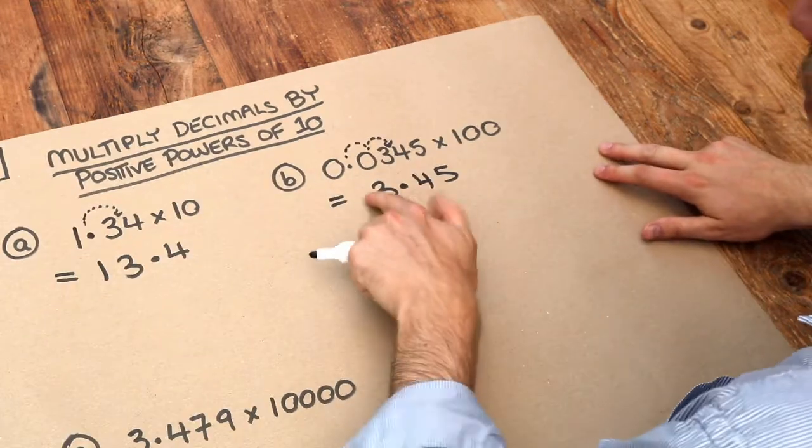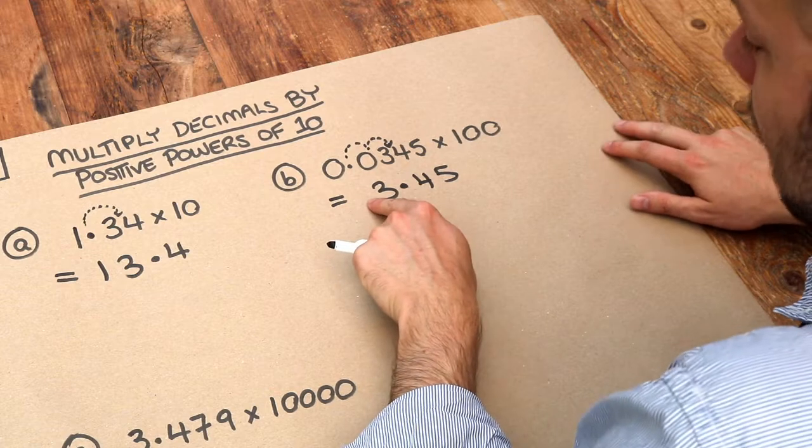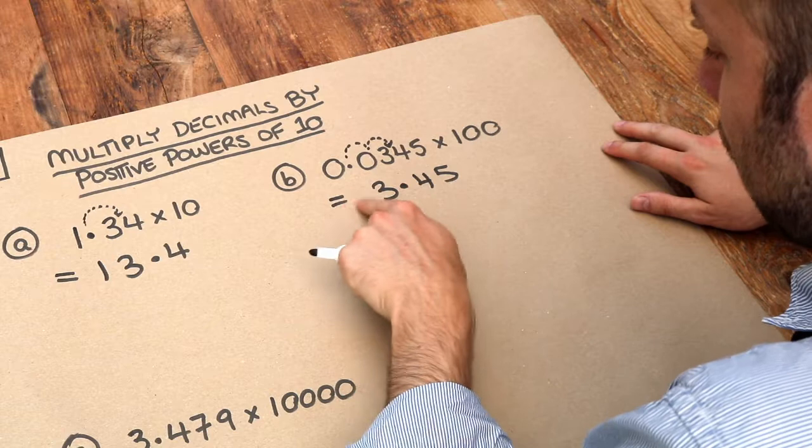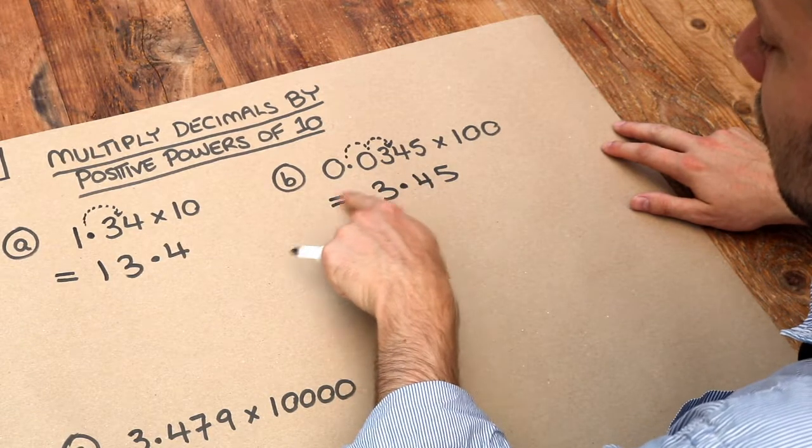And notice, by the way, that I didn't bother writing the zeros on the front, because we don't need to write that there's zero tens or zero hundreds. If you've got zeros on the front, and it's before the decimal point, there's no point of writing those zeros on the front there.